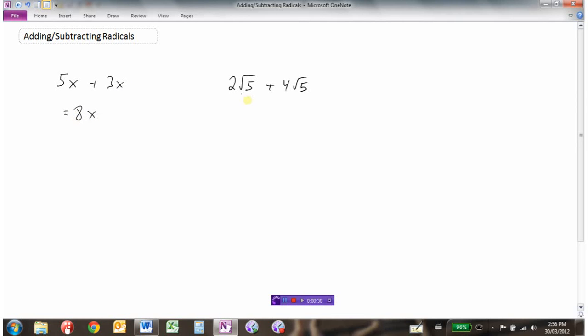We can do the same thing with radicals. If we have two √5's and we're going to add to that four √5's, well we have a total of six √5's. So just like 5x + 3x was 8x, two √5's plus four √5's ends up being six √5's.